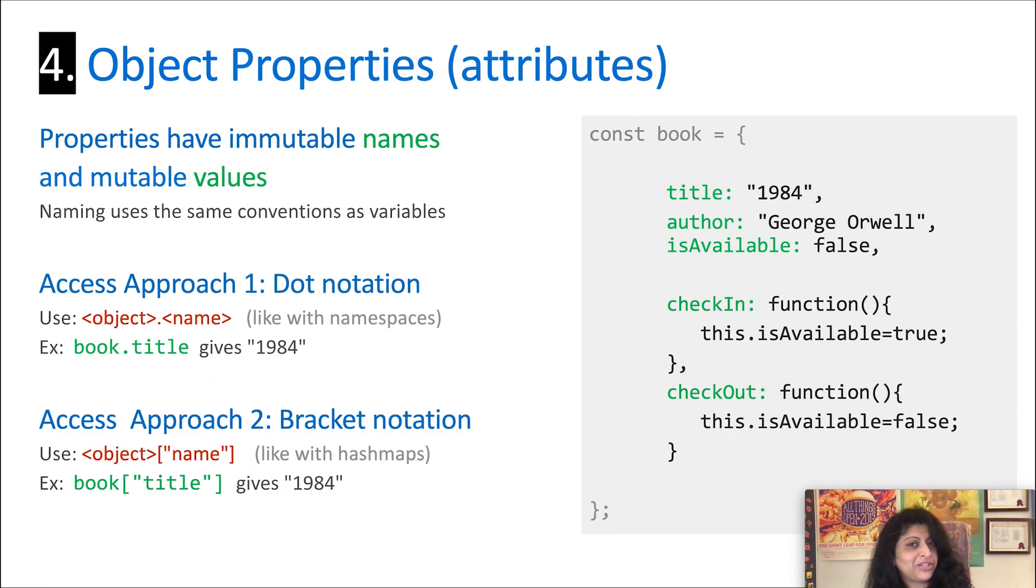Great, so we've created this object, but chances are you want to use those properties or invoke those methods, right? How do we do that? Let's start first by talking about properties. Properties are basically the attributes of the object. They have immutable names and mutable values. What that means is once you've assigned properties to an object, you can't alter the existing property name. However, you can alter its values and you can do that using one of two different notations. You can access and modify them.